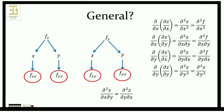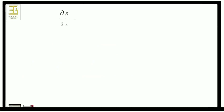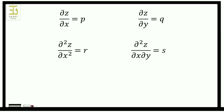We give notations: p for dou z by dou x, q for dou z by dou y, r for dou squared z by dou x squared, s for dou squared z by dou x dou y, and t for dou squared z by dou y squared. These notations are what we use in partial differential equations.